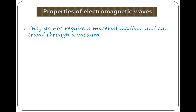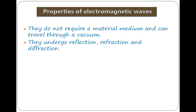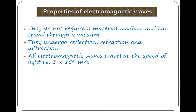Now let's look at the properties of electromagnetic waves. Number one: electromagnetic waves do not require a material medium for propagation — they can travel through a vacuum. Number two: just like other waves, they can undergo reflection, refraction, and diffraction. Number three: all electromagnetic waves travel at the speed of light, which is 3.0 × 10⁸ meters per second — that is 300 million meters per second.